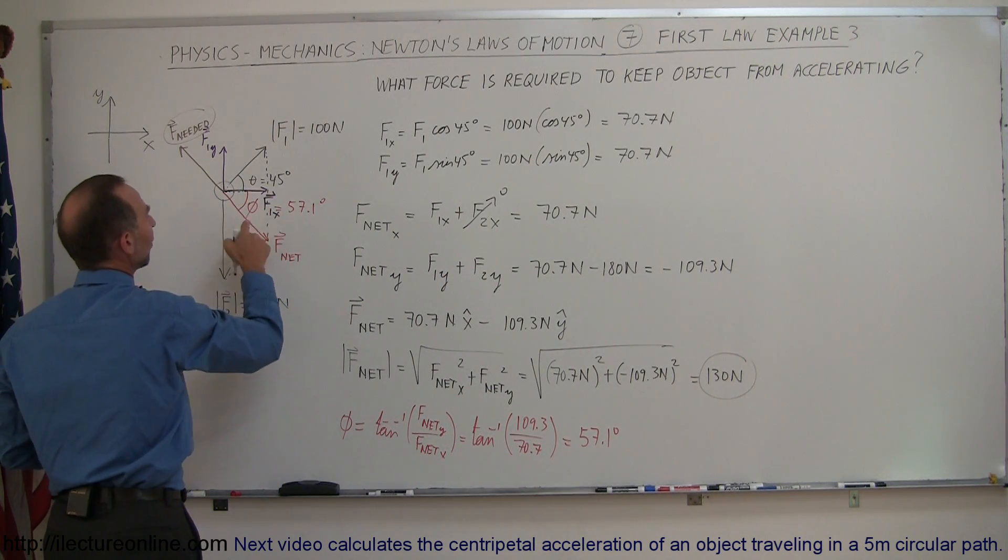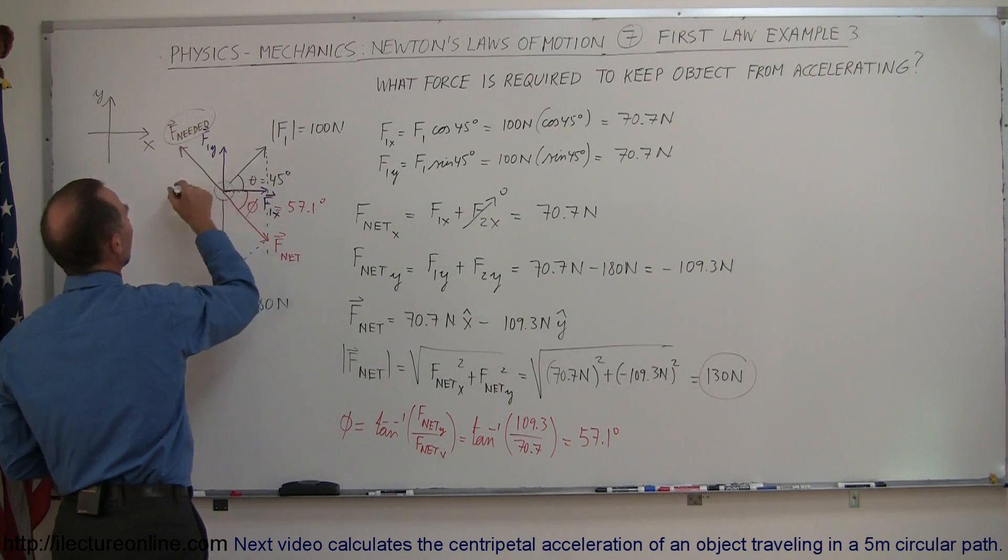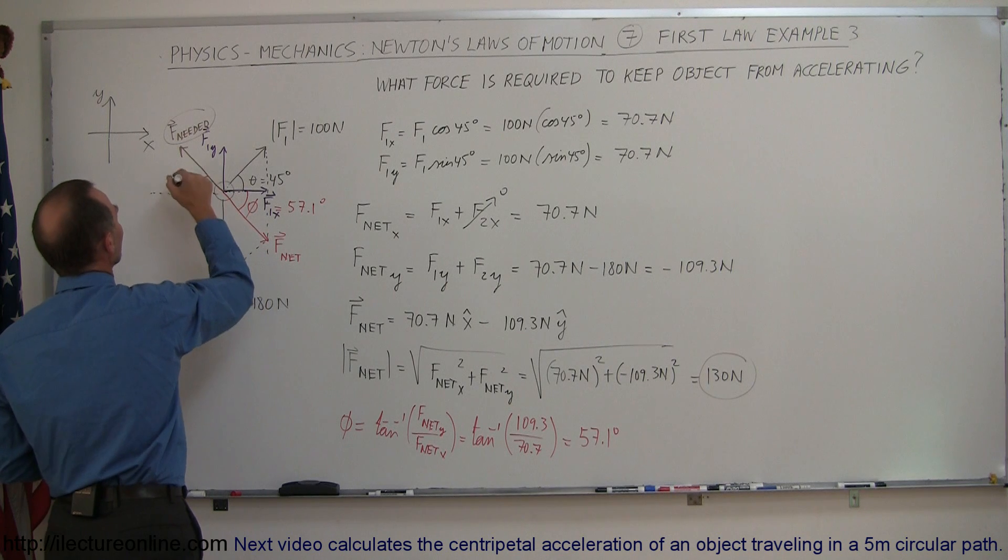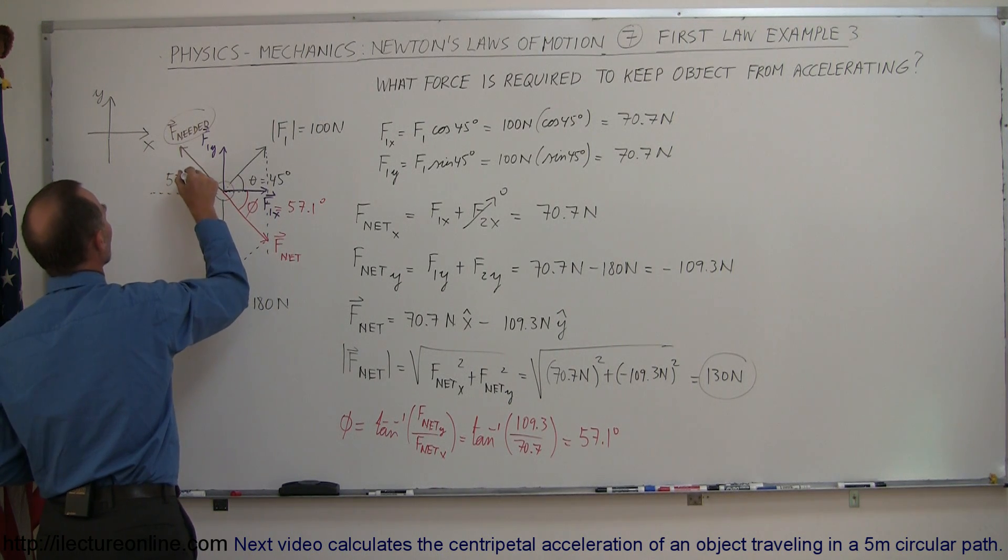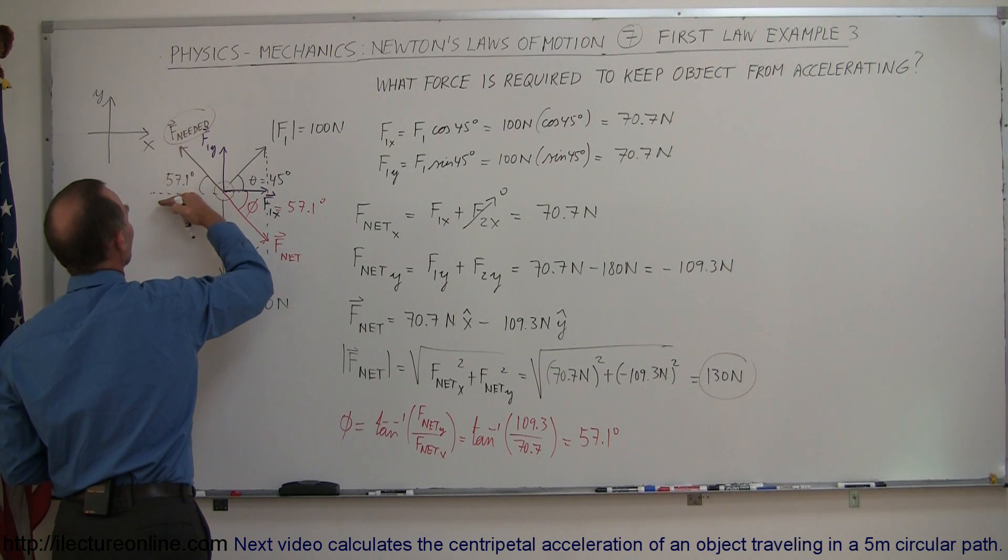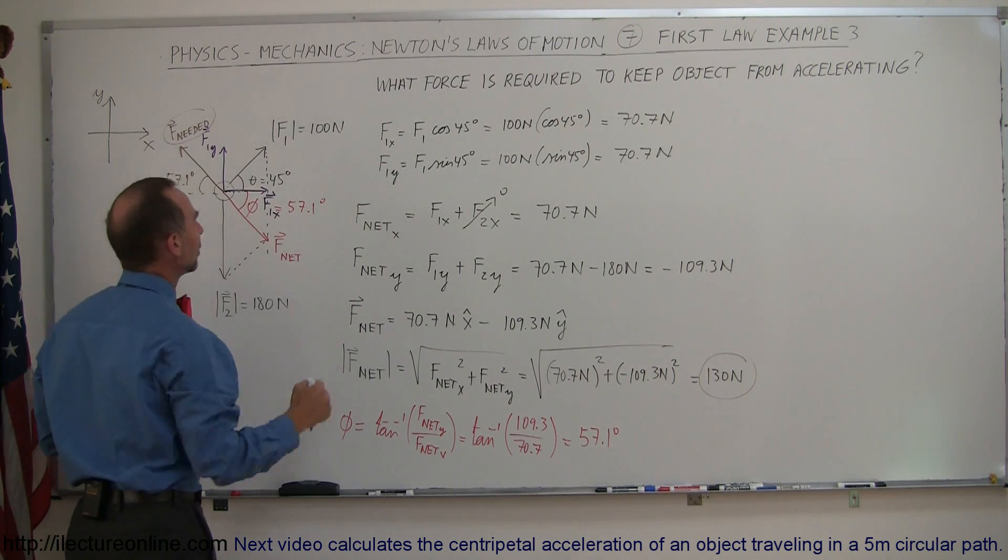So if this angle is 57.1 degrees, and I draw the line over here, so this is the alternate angle right there, or the opposite angle right there, so this is 57.1 degree.